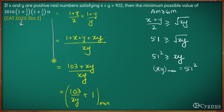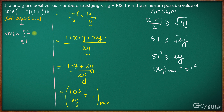Let us simply use these values of x and y in the expression. The required answer will be 2016 into (1 plus 1/51), which gives us 52/51, and similarly the other factor also becomes 52/51.